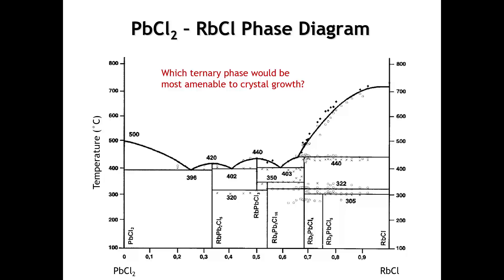Which ternary phase would be the easiest to grow crystals of? As a general rule, it's easiest to grow crystals of congruently melting compounds. We have two congruently melting compounds in this phase diagram: RbPb2Cl5 and RbPbCl3. However, RbPbCl3 is not stable all the way down to room temperature — it's only stable down to about 320°C, and below that temperature it's going to decompose into other phases. So really only one phase would be amenable to straightforward crystal growth: RbPb2Cl5.